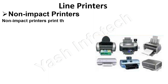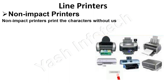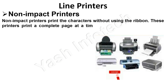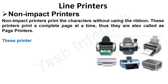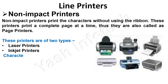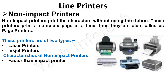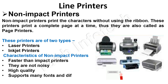Non-impact printers print characters without using the ribbon. These printers print a complete page at a time, and thus are also called page printers. These printers are of two types: laser printers and inkjet printers. Characteristics of non-impact printers: faster than impact printers, they are not noisy, high quality output, and supports many fonts and different character sizes.